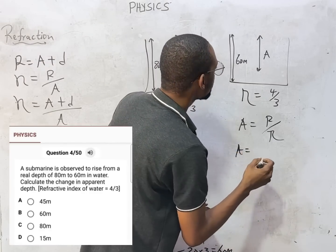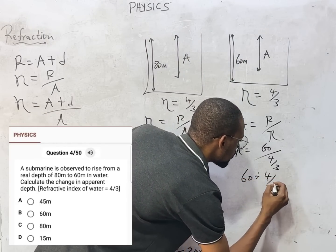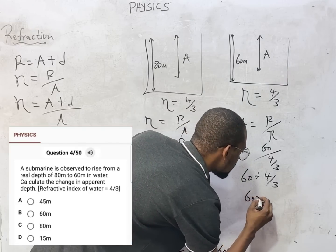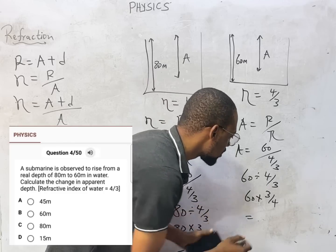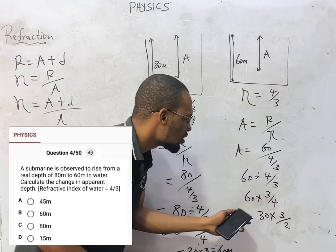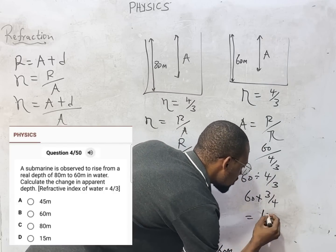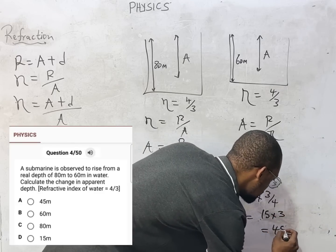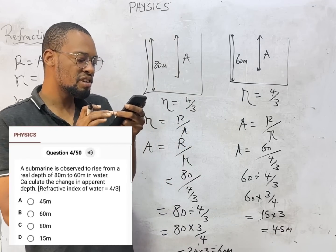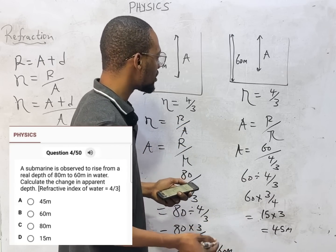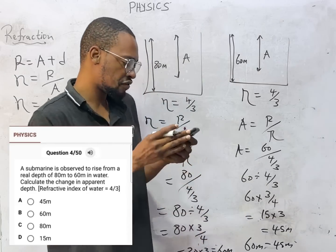For case B: apparent depth equals 60 over 4 over 3, which is the same as 60 times 3 over 4. Sixty divided by 4 is 15, so the result is 15 times 3, which equals 45 meters. The apparent depth in case B is 45 meters. The change in apparent depth is 60 meters minus 45 meters, which equals 15 meters. Option D is correct.